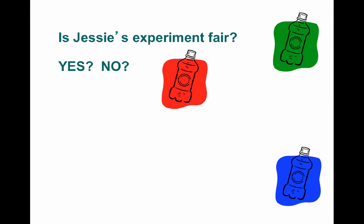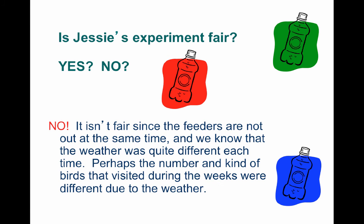Is Jessie's experiment fair? Jessie makes three feeders painted red, blue, and green, fills each with sunflower seed, and plans to leave each out for two days before measuring seed eaten — using one hook in her backyard. She puts the red feeder out on Tuesday, but the green feeder doesn't go out until Saturday because it's very snowy. The weather then turned rainy when the blue feeder goes out on Monday. Jessie's experiment is not fair because the feeders weren't out at the same time, and the weather was quite different each time, so the number and kinds of birds that visited may have differed due to weather.